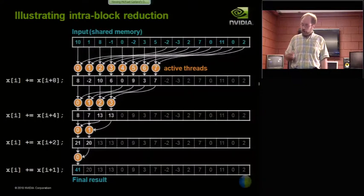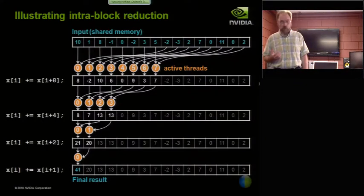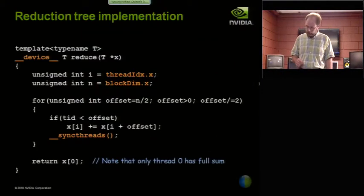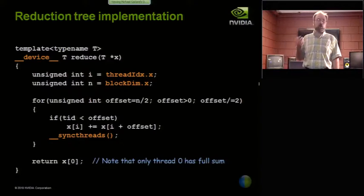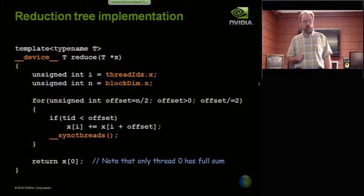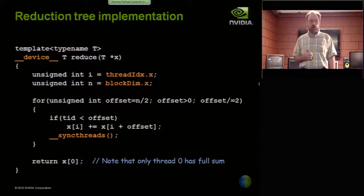This is actually a diagram of some code that's in our CUDA SDK. And the code that implements that summation tree looks like this. It's a fairly sort of typical kind of CUDA program. You compute your index to figure out what value you're processing.